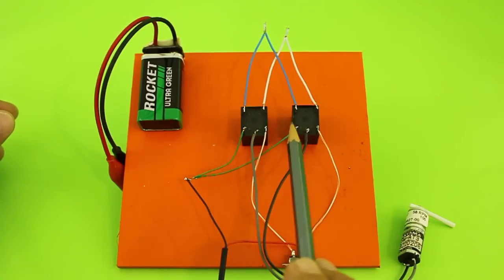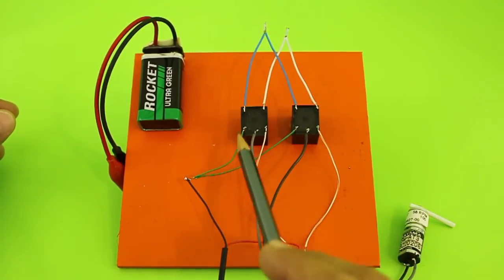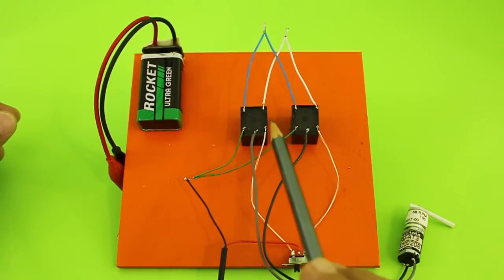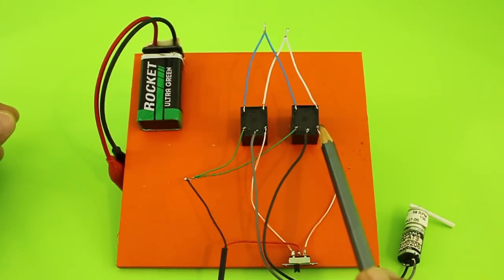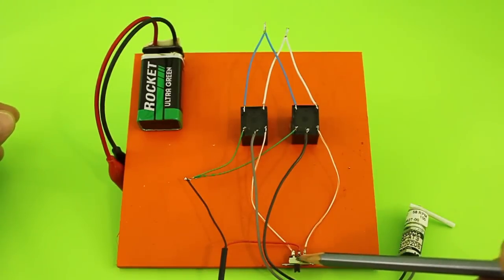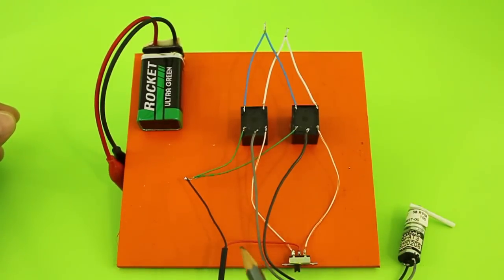These two contacts from the coil of each relay are connected together and go to the negative of the battery that controls the relays. And the other contacts of the coil go to the switch. And the center pin, the common of the switch, goes to the positive of the power supply for the relays.